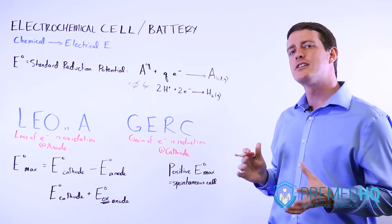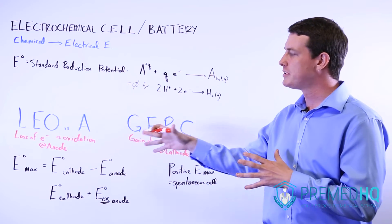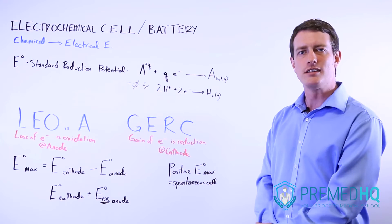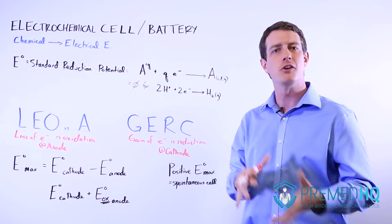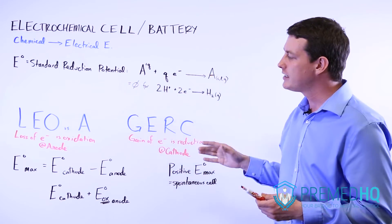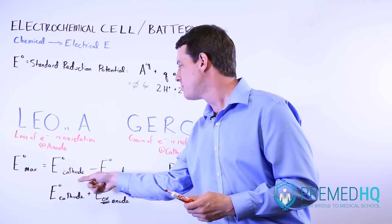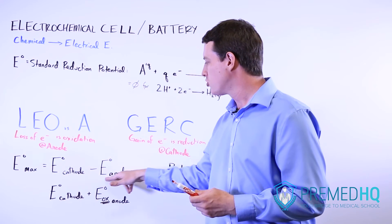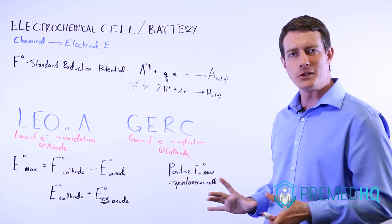The next thing is to figure out the maximum electrical potential that can be generated by this cell. That also tells you the voltage gradient that can be produced from one side to the other. And you find that by taking the reduction potential of the cathode and subtracting from that the reduction potential of the anode.